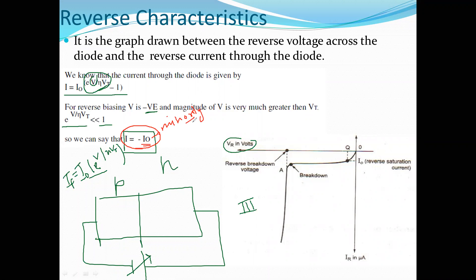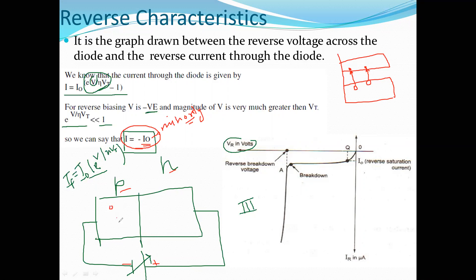What is the concentration of minority charge carriers? At constant temperature, it is fixed. How are minority charge carriers created? Because of temperature — in P and N type material, EHP generation occurs, and a few electrons jump to the conduction band. We generate a small number of electrons at room temperature. In reverse bias, the majority current is zero.